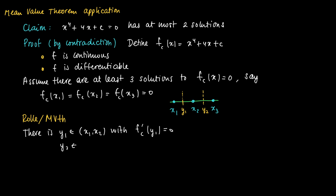And also, for the same reason, we should be able to find y2 in (x2, x3) with the property that the derivative vanishes in this point, so it should be equal to zero.